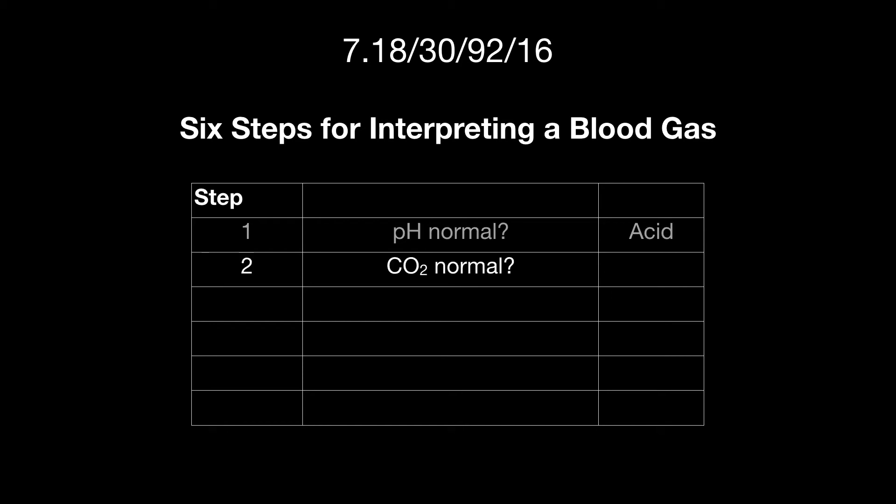The second step I look at is whether the CO2 is normal, acidic, or basic. In this case, it's basic. Then I look at the bicarb. Is the bicarb normal, acidic, or basic? And in this case, it's acidic because it's lower than it should be. Step four is I match the pH with the CO2 and or bicarb that is consistent with the pH. In our example, the bicarb is acidic and consistent with the pH, which is acidic.